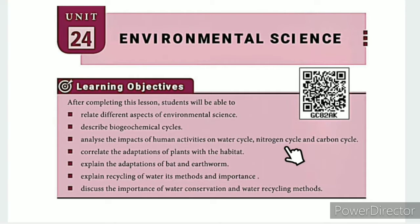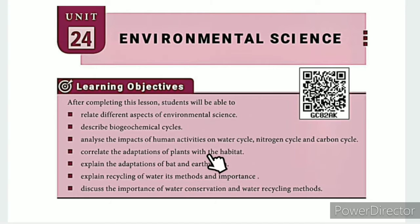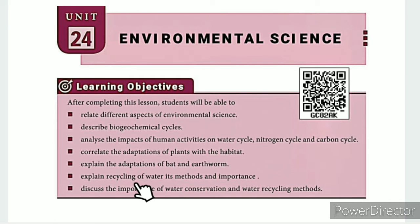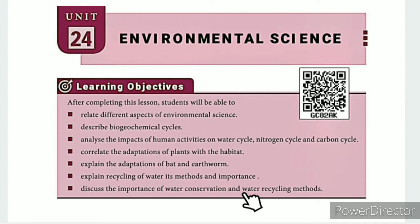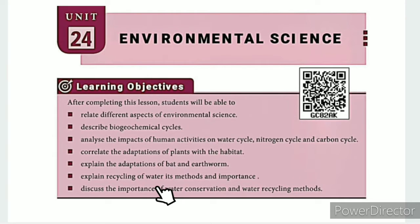You will also analyse impacts on the water cycle, nitrogen cycle, and carbon cycle. Additional objectives include correlating the adaptations of plants with their habitat, explaining the adaptations of bat and earthworm, and explaining the recycling of water, its methods and importance.